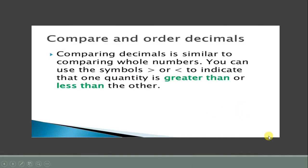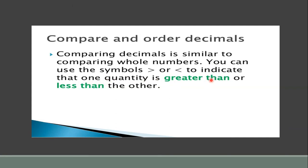First we will learn how to compare decimal numbers. Comparing decimals is similar to comparing whole numbers — the same way you compare whole numbers, you compare decimal numbers. You can use the symbols greater than, lesser than, or equals to, to indicate that one quantity is greater than, lesser than, or equal to the other.